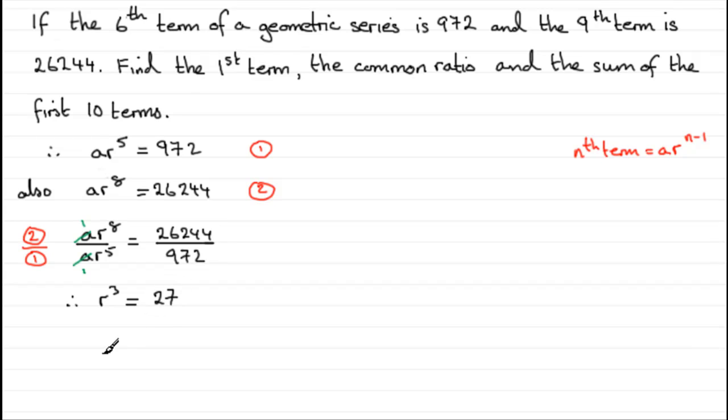So r^3 equals 27, and to get r, the common ratio, just need to take the cube root of 27. And that's going to be 3. So our common ratio is 3.